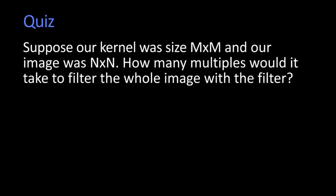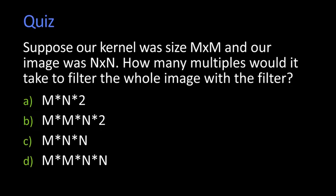So here's a quick little quiz for you. Suppose our kernel, our filter, the thing we're moving around with size m by m. And suppose our picture was n by n, maybe our picture is a hundred by a hundred or a thousand by a thousand. How many multiplies would it take to filter the whole image with that filter? 2mn, m times m times n times 2, m times n times n, m times m times n times n? So let's think about it. Well, actually, in fact, the answer, and we would normally write it this way, m squared n squared. Because every pixel, I have to multiply all of the coefficients times the pixels there underneath. So there are m times m coefficients, and I have to do that over all of the n times n pixels. So the number of operations is on the order of m squared n squared, which can get pretty large if m and n are moderate size.